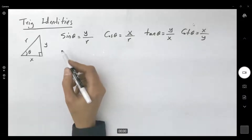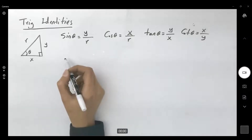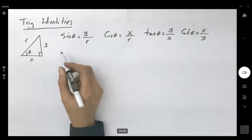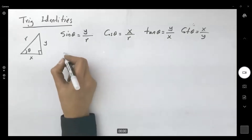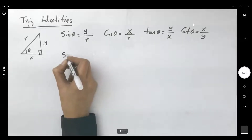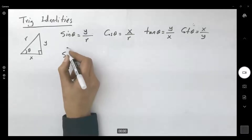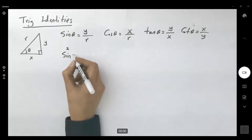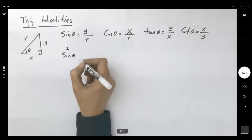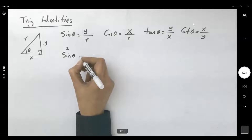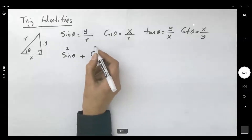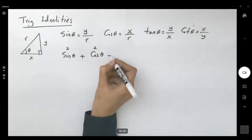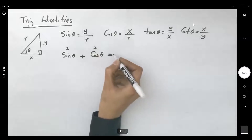We have some important observations. One of them is if I take sine and raise it to the second power and add it to cosine raised to the second power, the outcome is always 1.